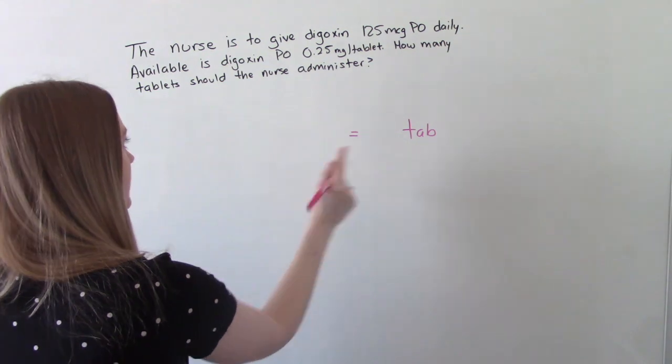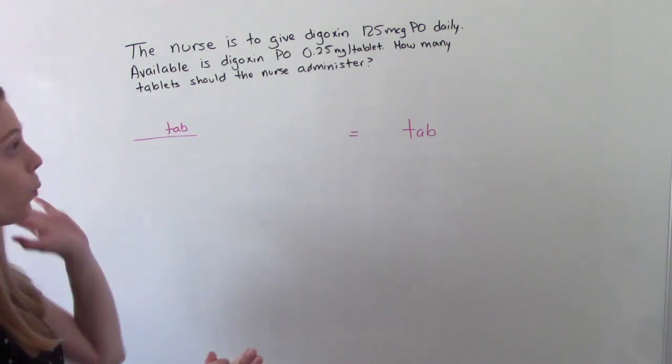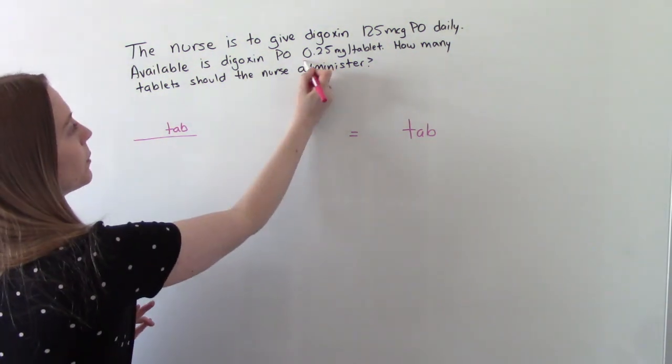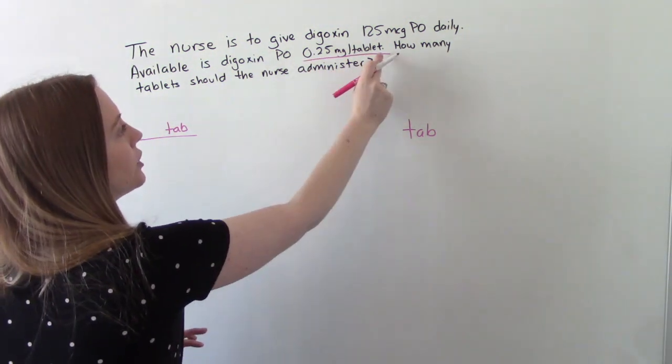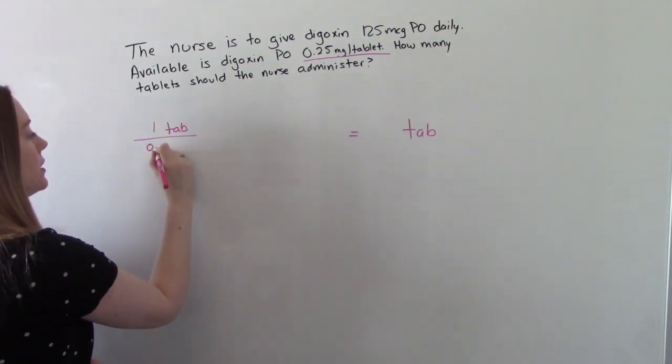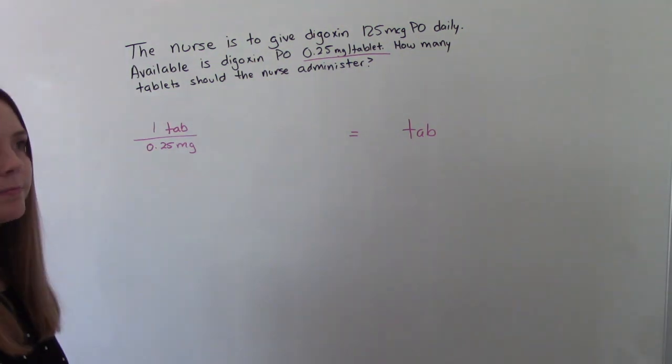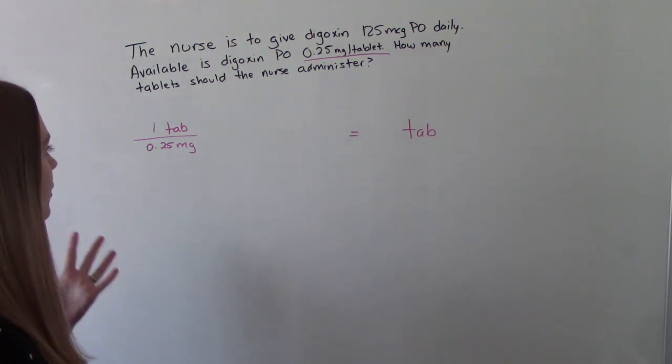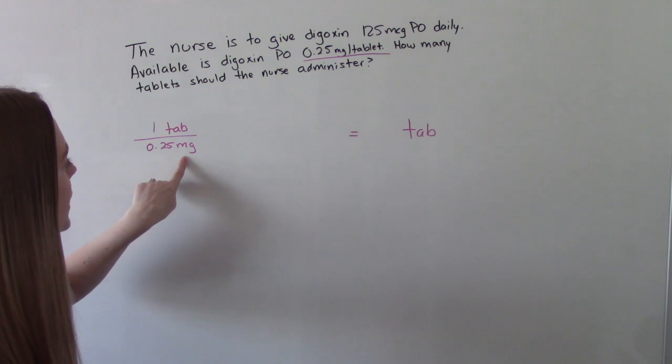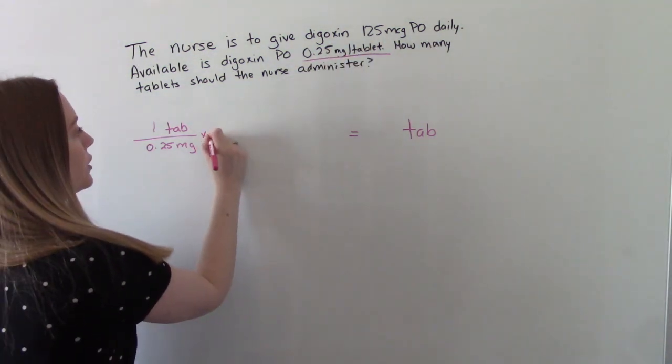And if it's going to be in our answer, it needs to be in our numerator. And where do we see it? In the problem, we see it right here. So this is telling us one tablet is the same as 0.25 milligrams. Now we need to do a conversion, right? Because this is milligrams and this is micrograms. So we're going to add our conversion right here.